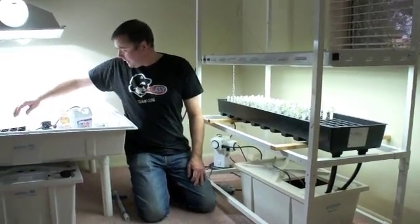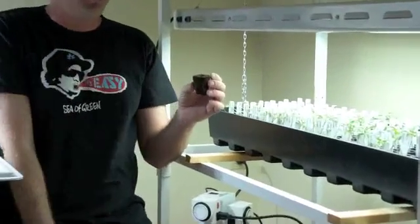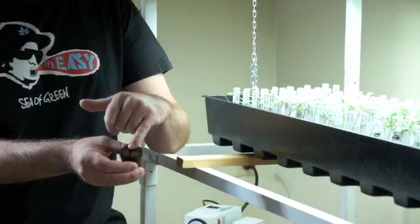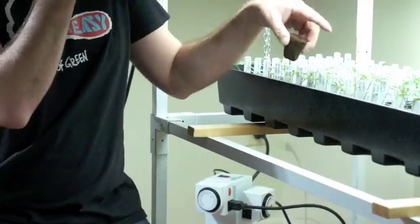And what we do is we take a botanic air ready grow plug. These are composted tree bark. And they've got a little hole for your seed in there. Basically you just put a seed, drop a seed in there, fill up your tray.